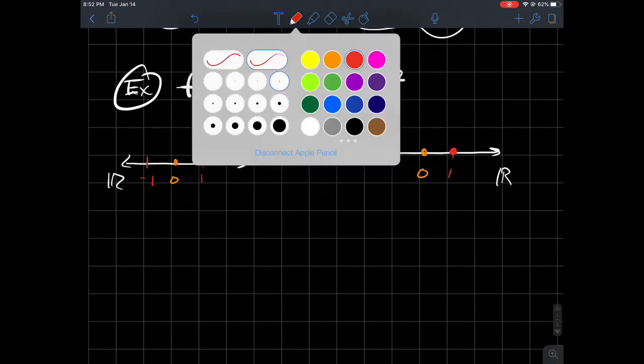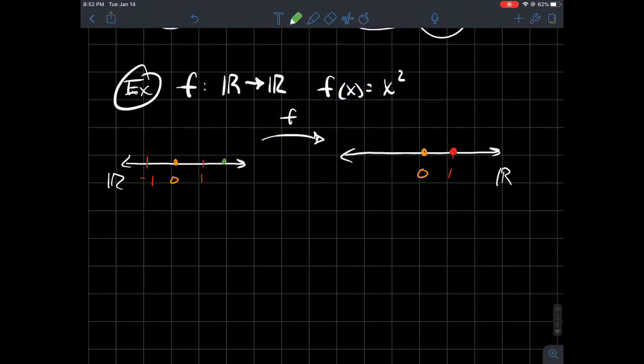I'll do one more, I'll do say two. Two when I make these little dots here, and so finally two is the last one I'll do, two should get sent over here to four according to this formula, so we'll call that four.